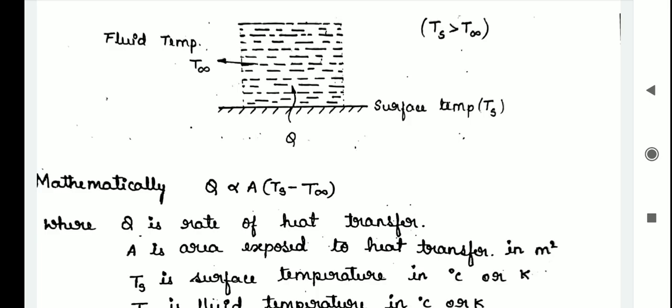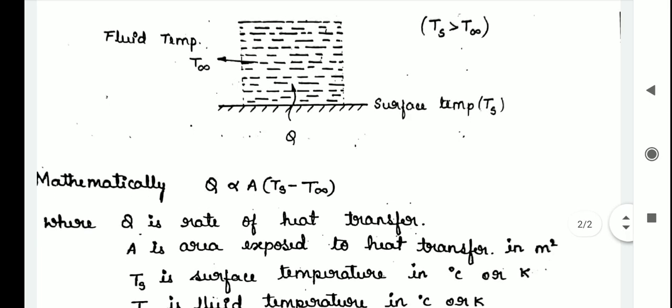There are two types of convection. First one is forced convection and second one is free or natural convection. In forced convection, if the mixing motion is induced by some external means such as a fan, pump, or blower, it is said to be forced convection.